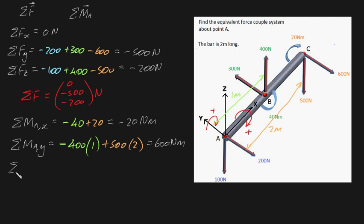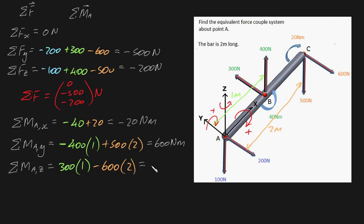Now let's solve for the sum of moments at point A about the z axis. What forces produce torques tending to rotate this about the z axis? The 300 Newton force will produce a torque of 300 times its perpendicular distance of one meter. The 600 Newton force will produce a negative torque of minus 600 times two meters, giving a net moment about the z axis of minus 900 Newton meters.